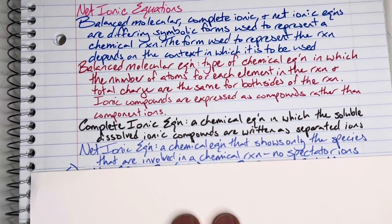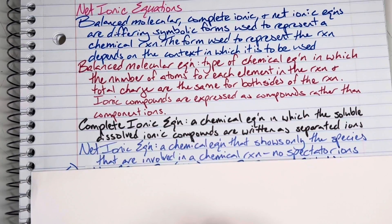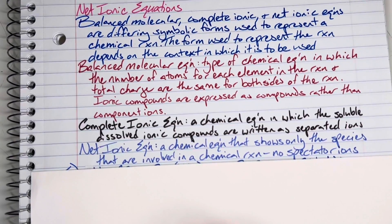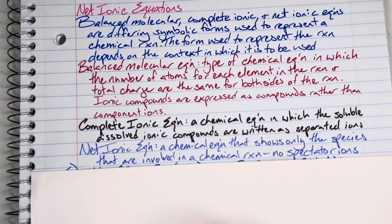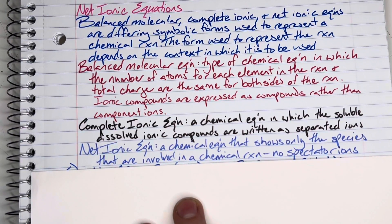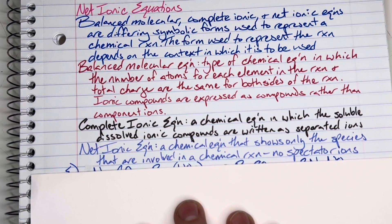Net ionic equation is a chemical equation that shows only the species that are actually involved in a chemical reaction. If I don't form something new, I don't write it for net ionic equation. I'm going to eliminate anybody that does not change states, so no spectator ions are allowed.